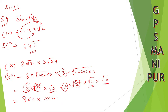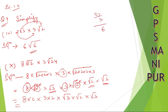So into root 3 into root 2 into root 3. Now 8 into 2 is 16, 16 into 2 is 32, 32 into 3 is 96. So it is 96.